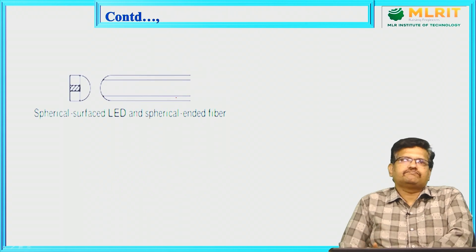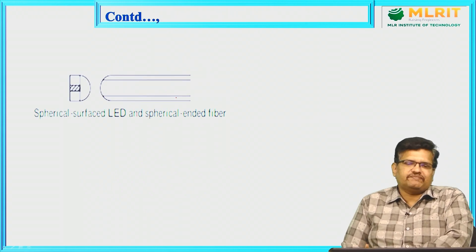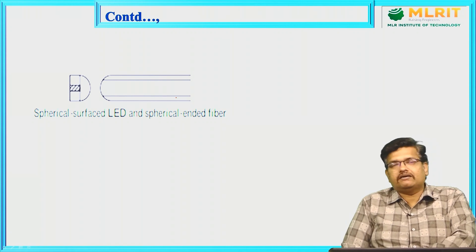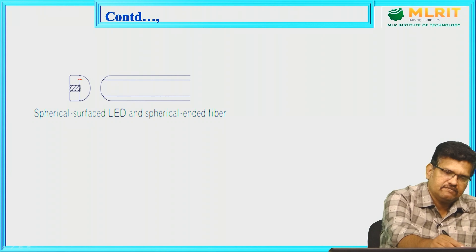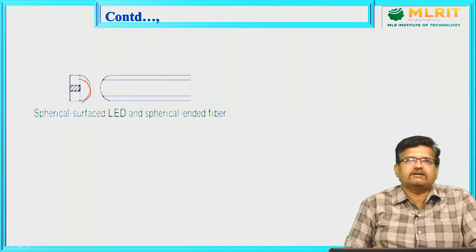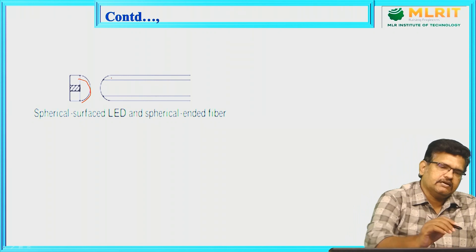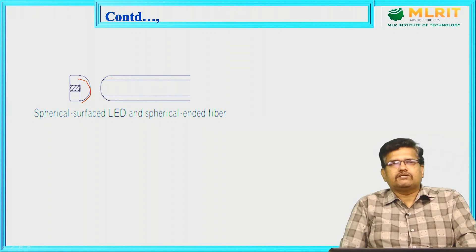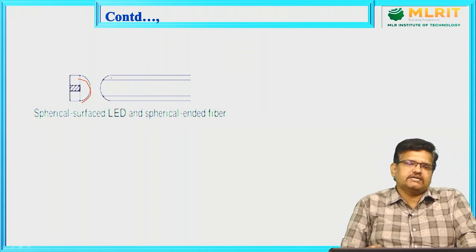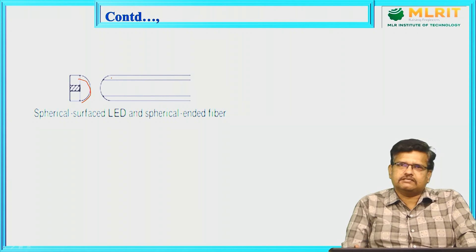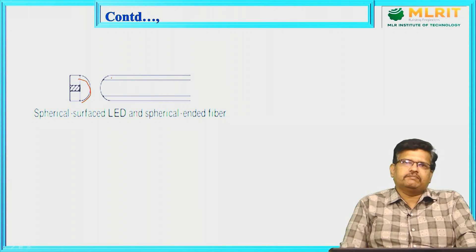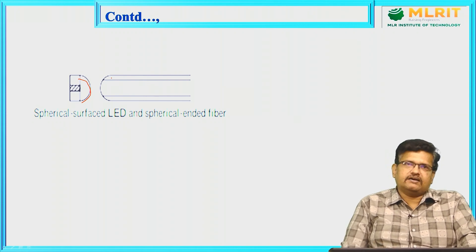Next is the spherical surface LED and spherical ended fiber. Here we have a spherical surface LED, and one kind of lens is kept here. The next one is the spherical end of the fiber. To couple the signal efficiently — the light signal into the fiber core — this is another type of lensing scheme where light can be coupled into the fiber effectively and efficiently.